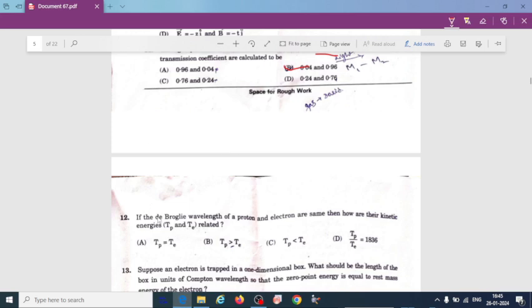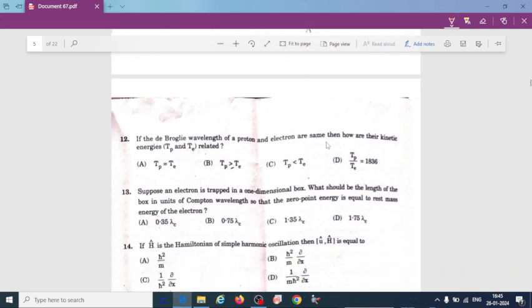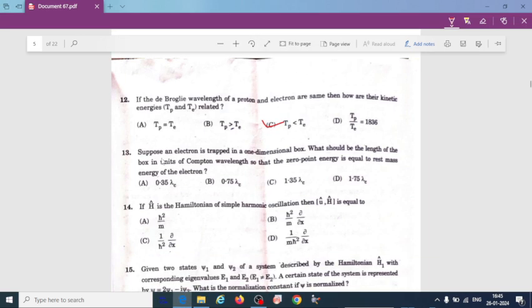The next one, if the de Broglie wavelength of proton and electron are same, then how are their kinetic energy. This also I have explained. So kinetic energy of electron is greater than proton. Suppose an electron is trapped in a one dimensional box. What should be the length of the box in units of Compton wavelength so that the zero point energy is equal to rest energy of the electron. So according to Compton wavelength, the option A is correct, 0.35 lambda c.